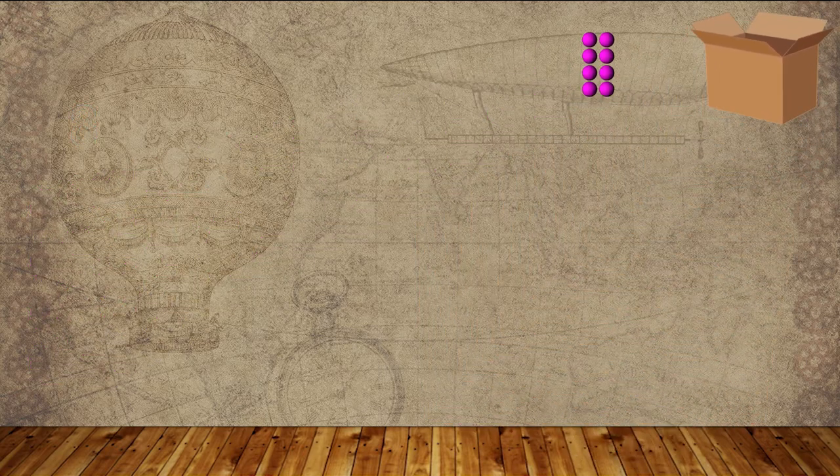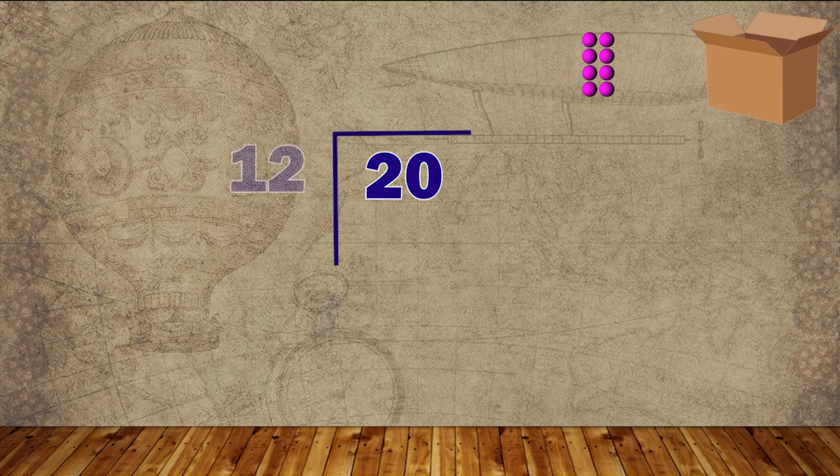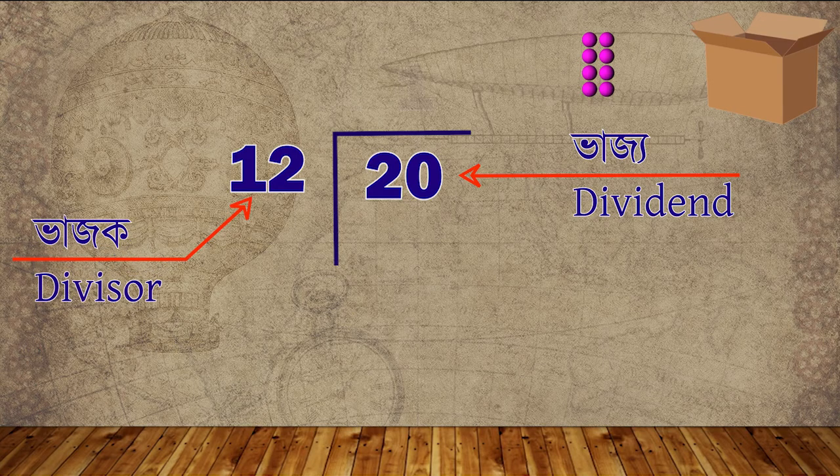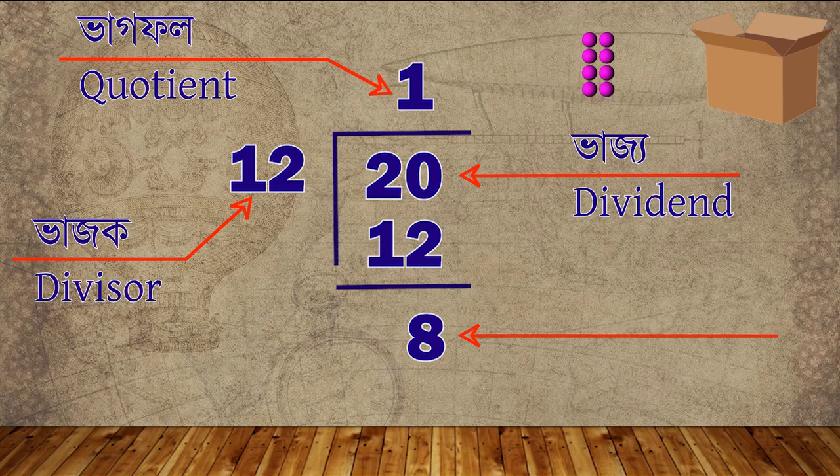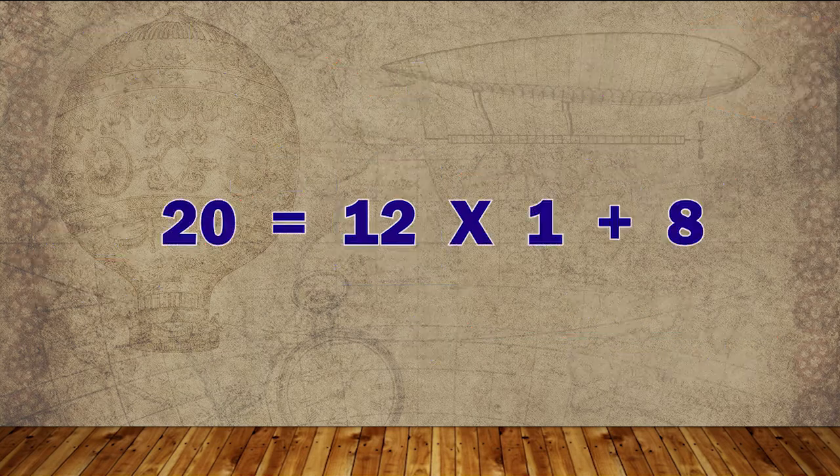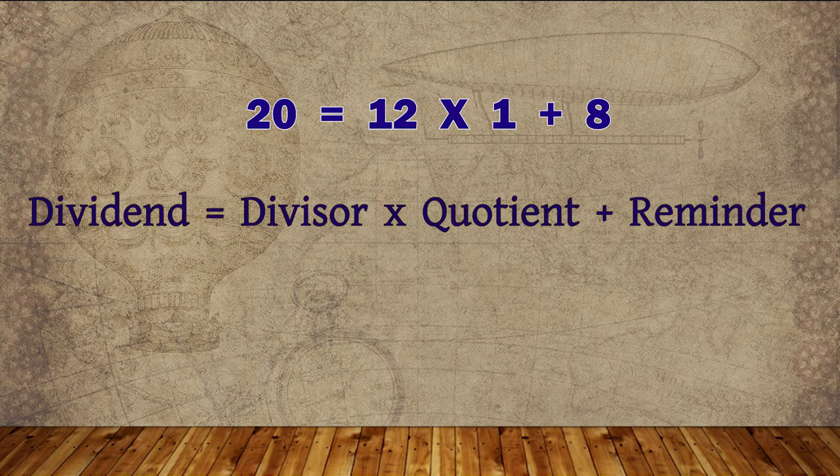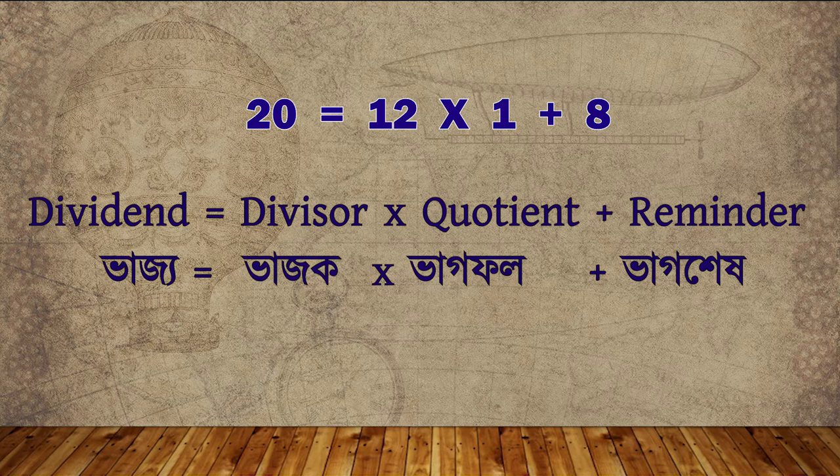If we explain the same by division method, then we can say 20 divided by 12, where 20 is the dividend, 12 is the divisor, we get the quotient 1 and remainder 8, or 20 is equal to 12 into 1 plus 8. That is, dividend is equal to divisor into quotient plus remainder.